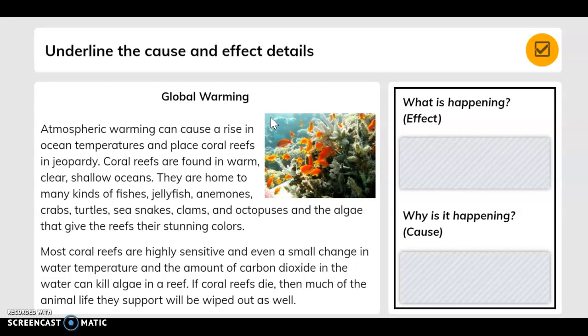Atmospheric warming can cause a rise in ocean temperatures and place coral reefs in jeopardy. Coral reefs are found in warm, clear, shallow oceans. They are home to many kinds of fishes, jellyfish, anemones, crabs, turtles, sea snakes, clams, and octopuses, and the algae that gives the reefs their stunning colors.